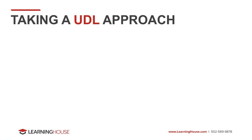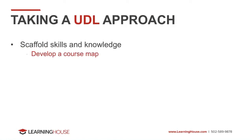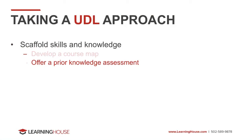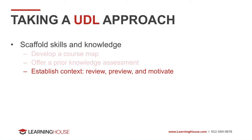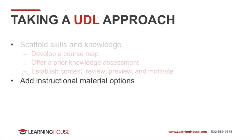The UDL framework has something like 39 instructional design guidelines, so I'm going to boil it down to the best recommendations as they relate to retention. It's essential to scaffold skills and knowledge in your course — developing a course map is essential, and there's a video with templates on the Center for Teaching and Learning site. You could offer a prior knowledge assessment to gauge bias, misunderstanding, and preparedness at both the individual and class level to help you adjust things on the fly. Use the same mantra: review, preview, motivate — establish context and point out links between what students have already learned and what they'll learn later. Add options for instructional material in your course. It's a lot of work, but once you've taught the course once or twice, you'll have a more solid understanding of the pain points where it makes sense to target your efforts first.